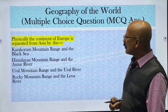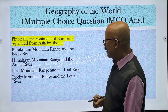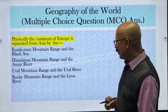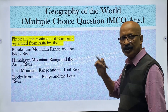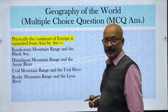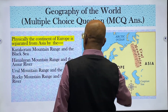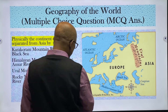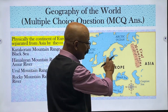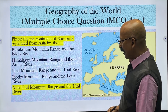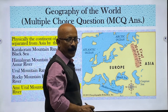Physically, the continent of Europe is separated from Asia by which mountain range and river? Options are: Karakoram Mountain Range and the Black Sea, Himalayan Mountain Range and the Umber River, Ural Mountain Range and the Ural River, or Rocky Mountain Range and the Lena River. Looking at the map, the correct answer is Ural Mountain Range and the Ural River, which lies between Europe and Asia.